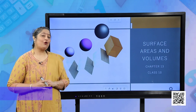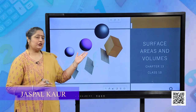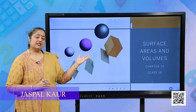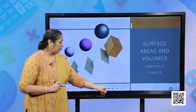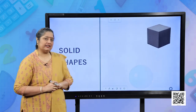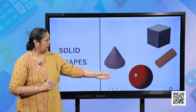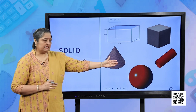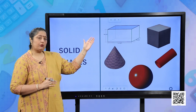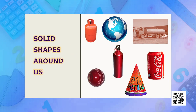Hello students, I hope you all are doing good. Today we are going to start a new chapter, Surface Areas and Volumes. These are all about the solid shapes we have already studied — we have studied about a cube, a sphere, a cone, a cylinder, and a cuboid. Now let us see where we find these solid shapes in our daily life.